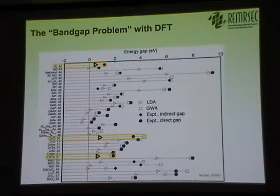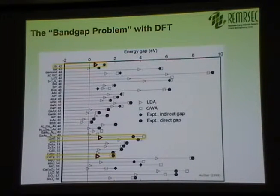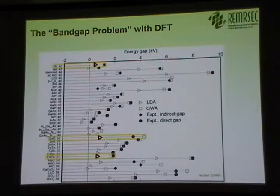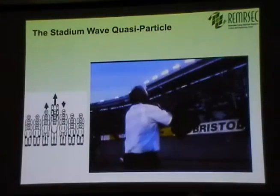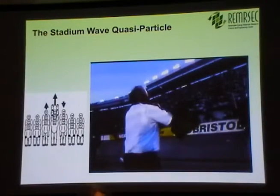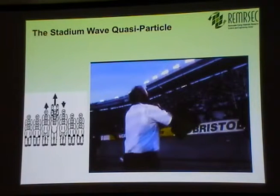So DFT does a terrible job at band gaps. In general, between the triangles and the solid points, you see that depending on the material, there can be a very large gap. How do we fix that? That's what I want to talk about today — and the way I'm going to do it is by talking about quasi-particles.